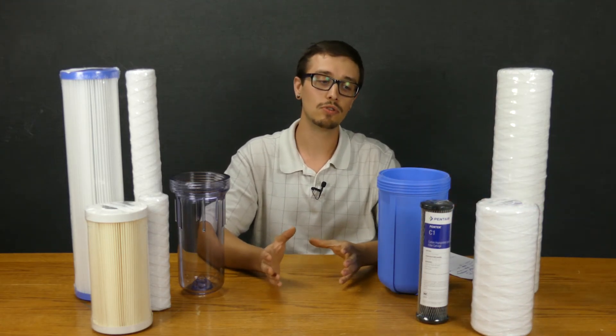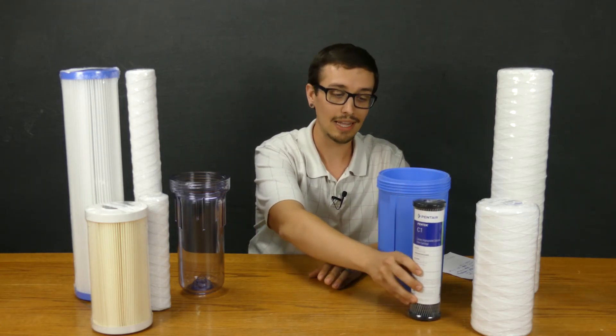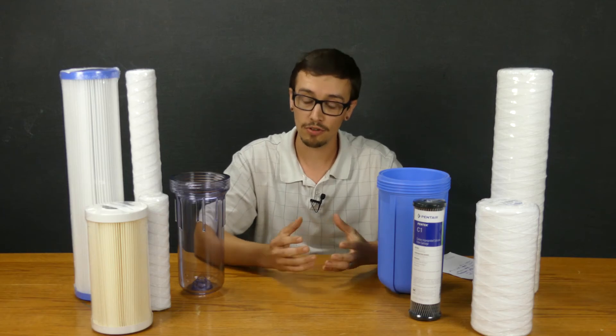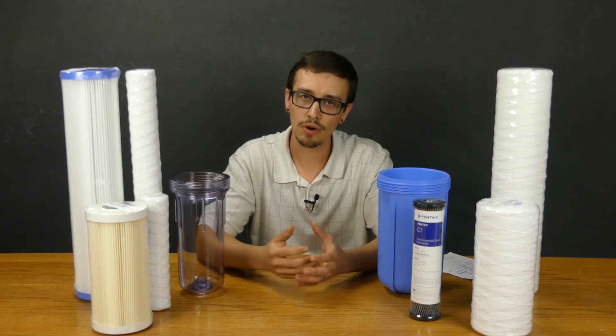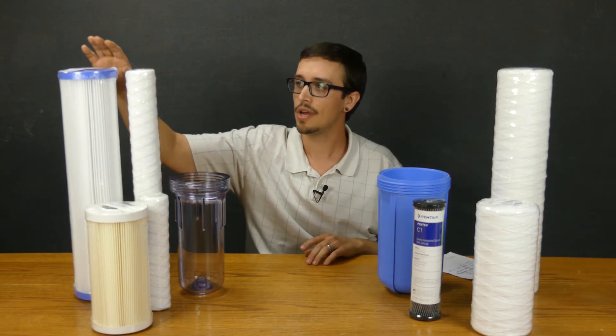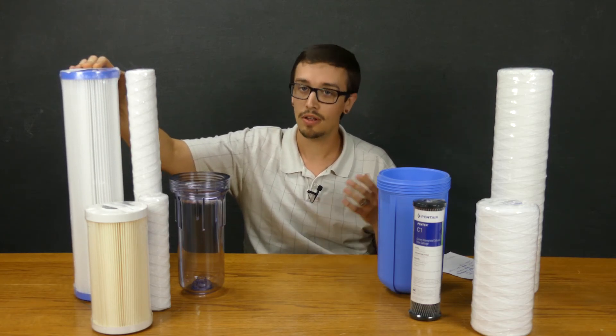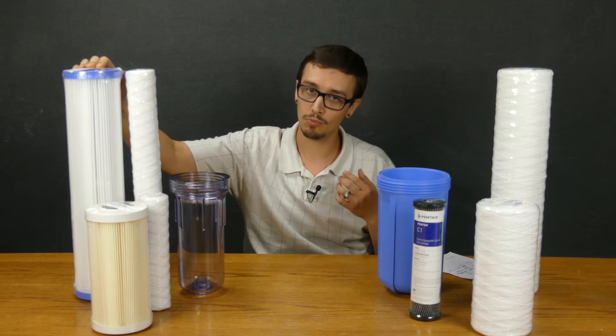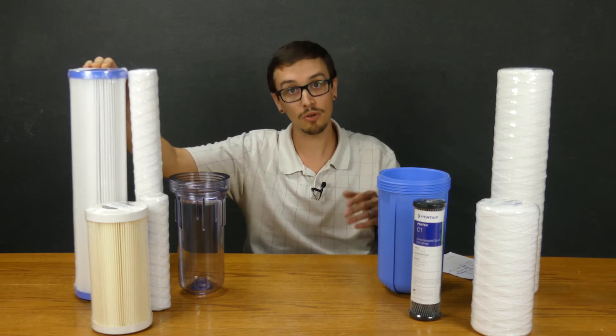The point-of-use filters, these are all typically 2 gallons a minute or less. As I mentioned with the pleated filters, they're oriented towards higher flow. This filter is going to be rated for closer to 20 gallons per minute. Less restriction on the system means more water through and less pressure loss experienced by you, the user.